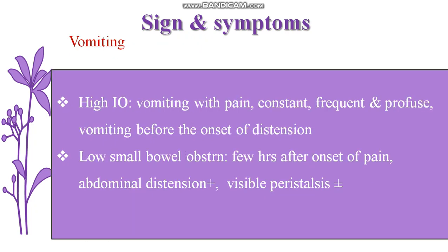Coming to the next manifestation, which is vomiting. In proximal region, high intestinal obstruction, there is vomiting with pain. It will be constant, frequent, and profuse vomiting before the onset of distension. The child will experience vomiting with pain - it is constant, occurring frequently, and there is profuse vomiting.